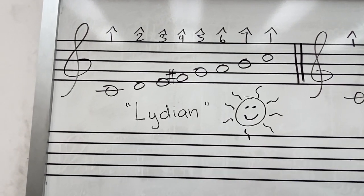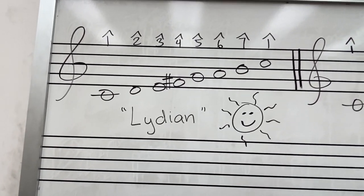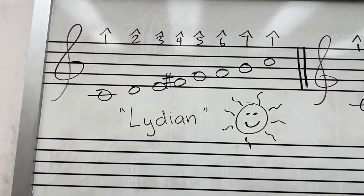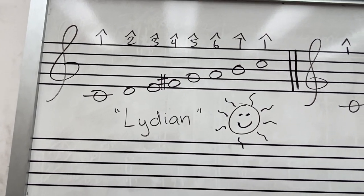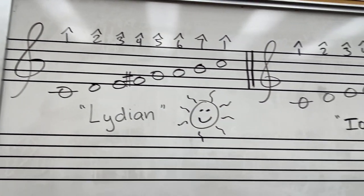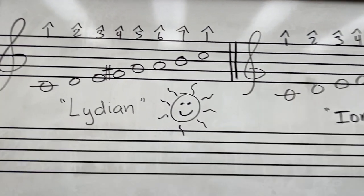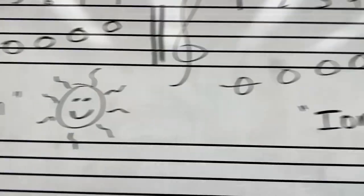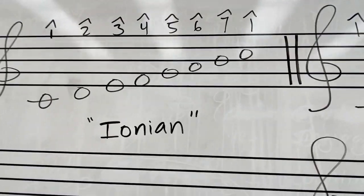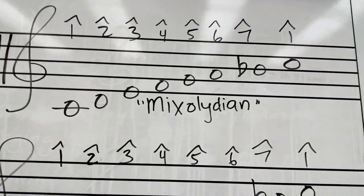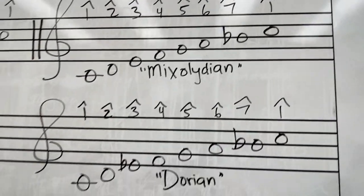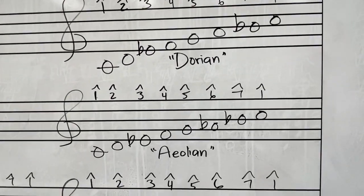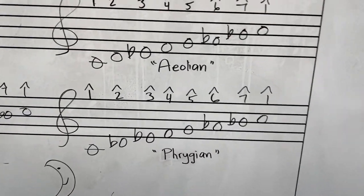In this video, we're going to talk about the six major modes. Modes are like gods and goddesses — they have very different characteristics. The ones I'm going to be covering are Lydian, Ionian, Mixolydian, Dorian, Aeolian, and Phrygian.